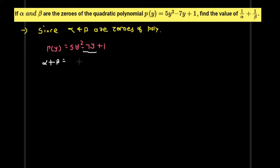The sum is minus 7, but minus and minus gives positive, so we have 7. And alpha into beta is 1.